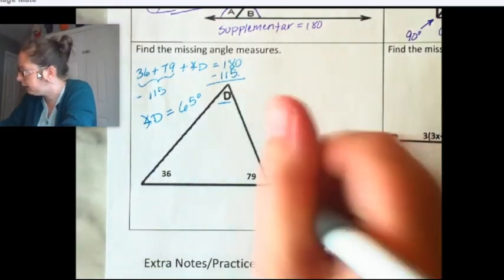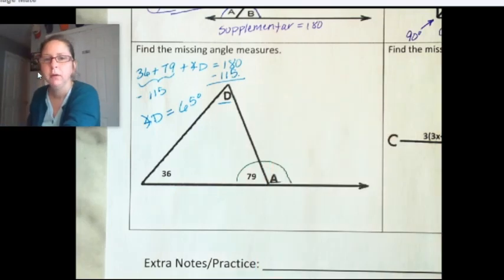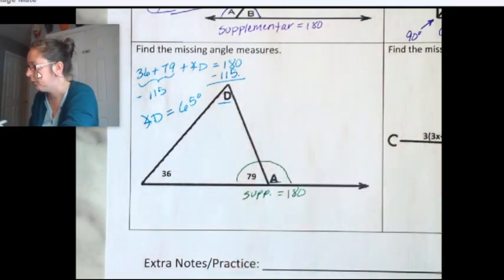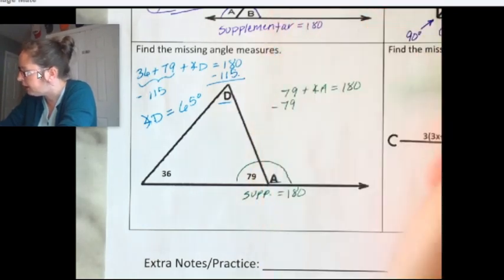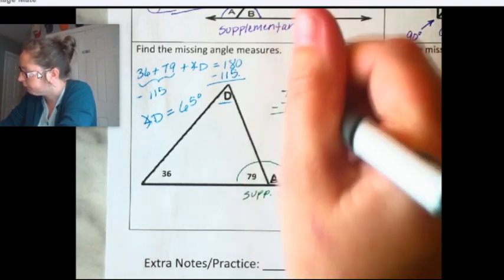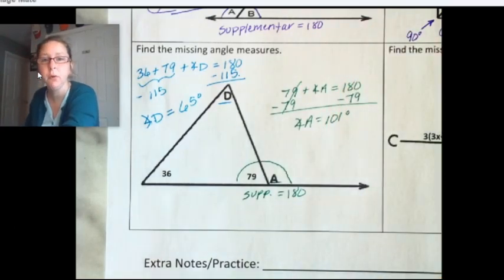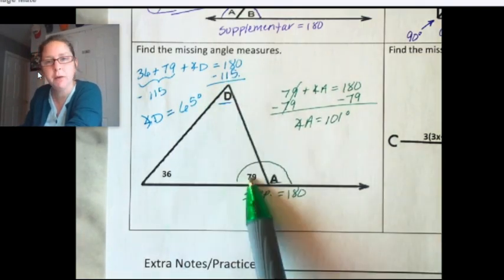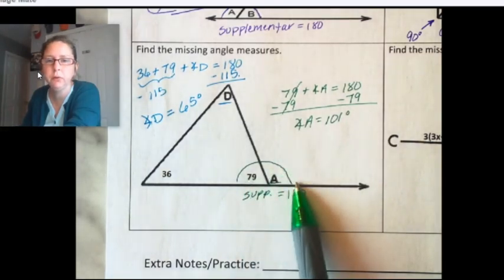Let me find angle A in green. Down here, these two angles form a straight line, so they are supplementary, which means they equal 180 degrees. So 79 plus angle A equals 180. Let's subtract the 79 degrees. Angle A equals 101 degrees. I found two angle measures from the same figure using different vocabulary and theorems — one equaled 180 because the three measures of any triangle equal 180, and the other because I had two supplementary angles.